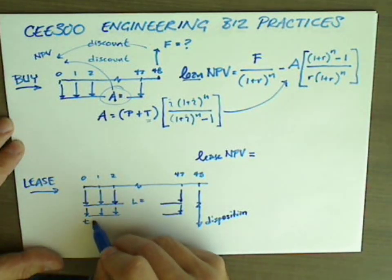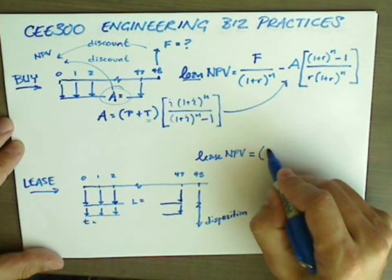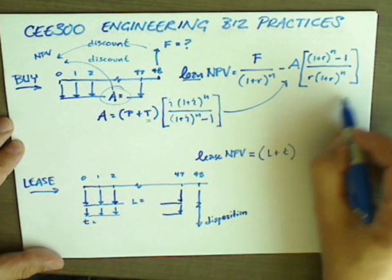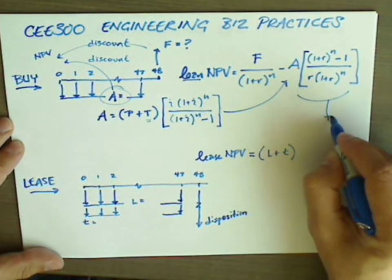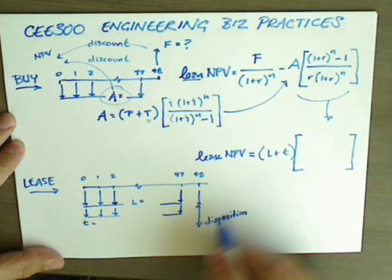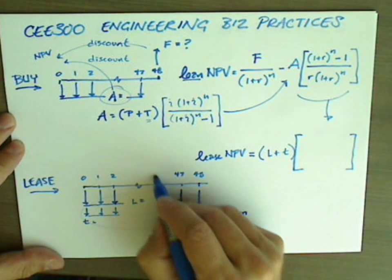Well, here we have L and we have T. Those are our monthly costs. And we can use the exact same present worth factor to discount all of the monthly payments and express them at time equals zero.